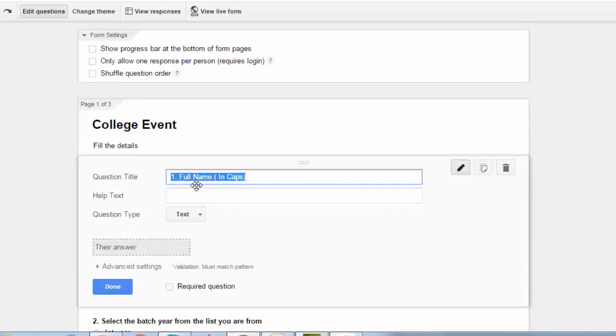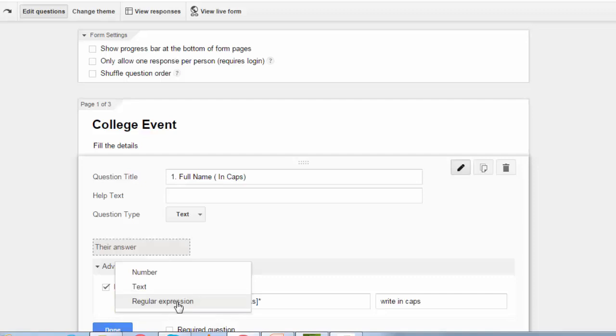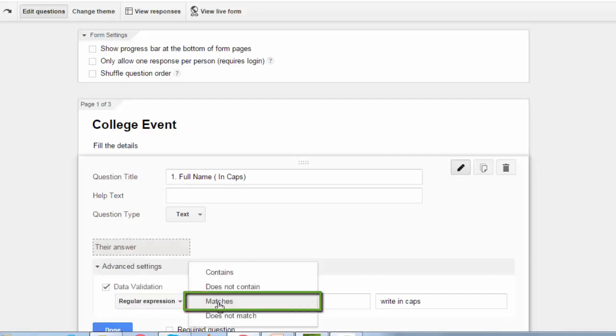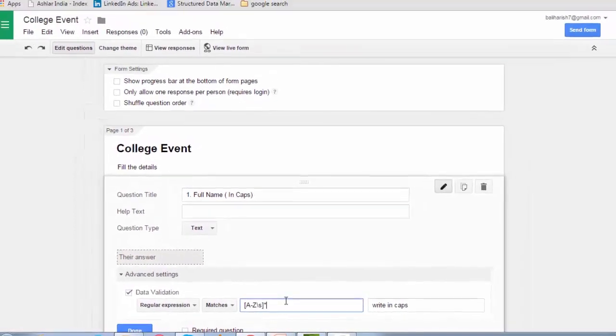This is the form. Click on advanced settings. I have chosen regular expression, matches, and this is the syntax that I have used. This is the error text message. Now let me break the syntax into parts and explain each part in detail.